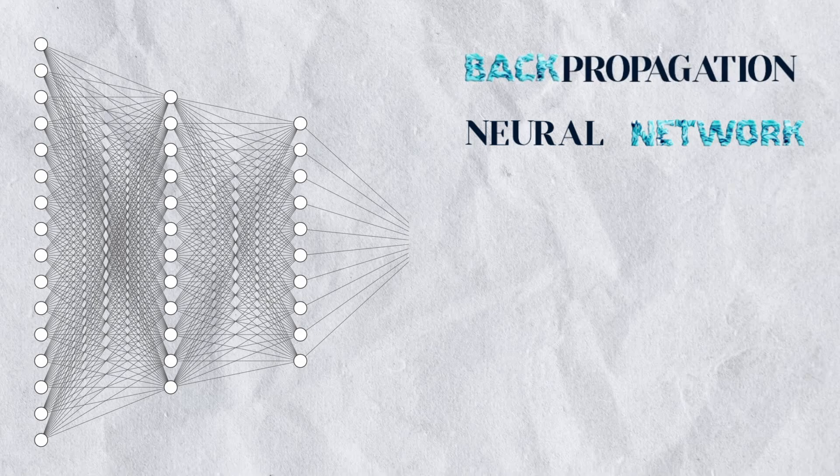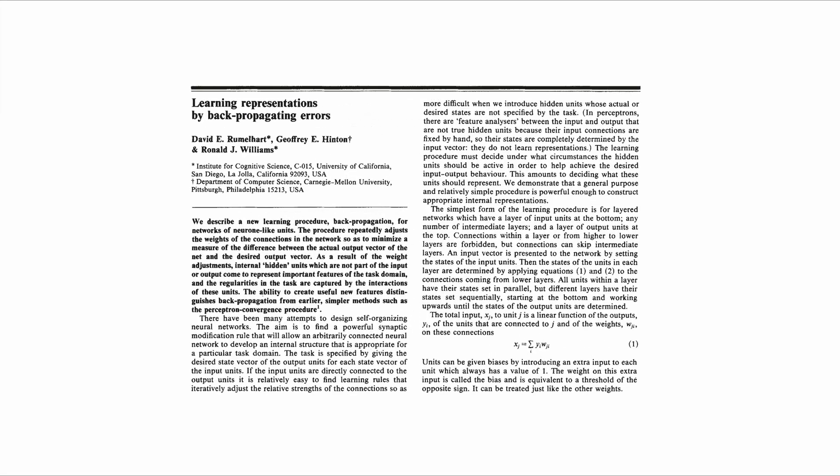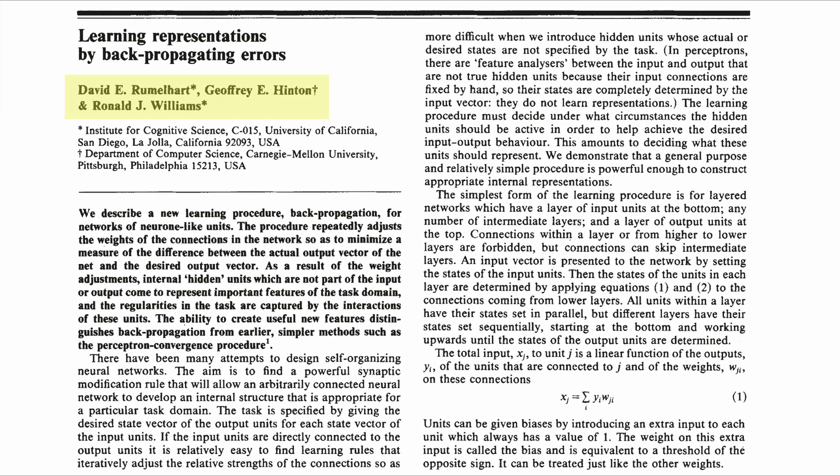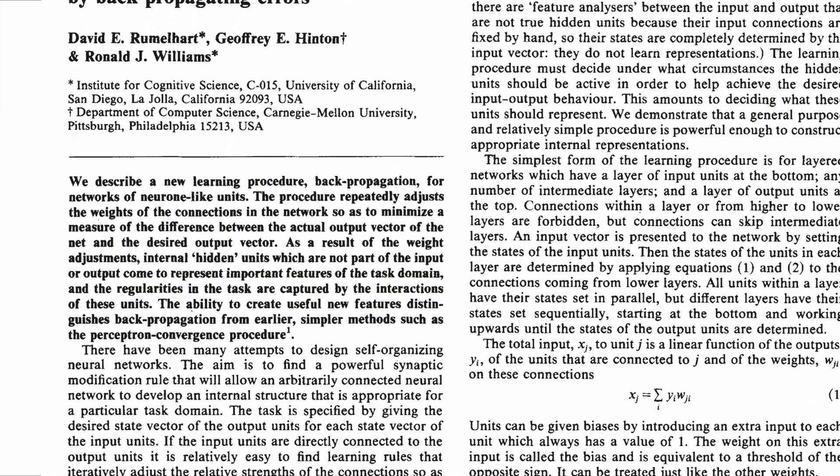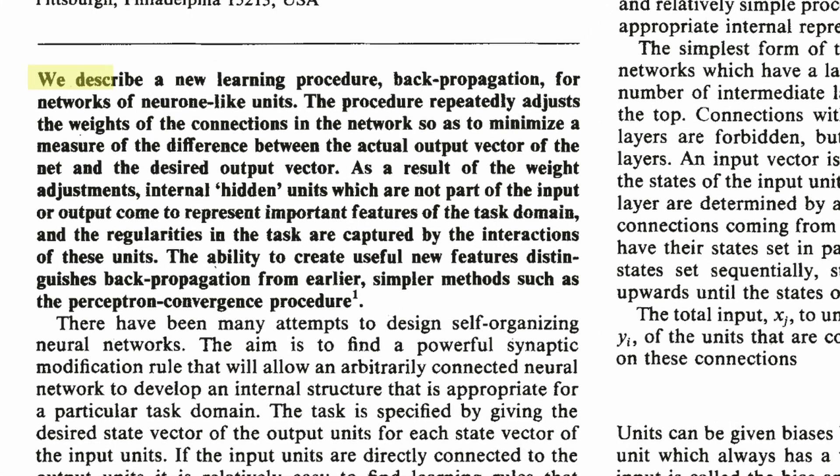The learning part in machine learning couldn't have been possible without the concept of back propagation, which was introduced by David Rumelhart, Geoffrey Hinton, and Ronald Williams in this really important 1986 Nature paper, Learning Representations by Back Propagating Errors. The procedure repeatedly adjusts the weights of the connections in the network to minimize a measure of the difference between the actual output vector of the net and the desired output vector.